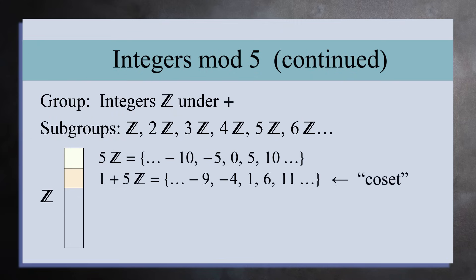We call this set a coset, and it's not a subgroup. It's not closed under addition, doesn't have inverses, and does not contain the identity element. It's not even close to being a group. This coset does not overlap with the subgroup 5Z, since every number in the coset has a remainder of 1 when you divide by 5, and every number in the subgroup has a remainder of 0 when you divide by 5.